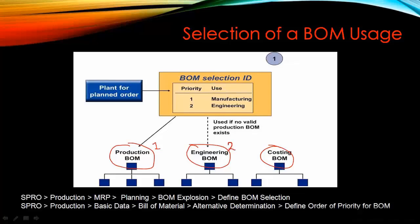The second priority would be the engineering BOM, and the third priority is the costing BOM. So if the system finds the production BOM, it will copy it and finish the process. If the production BOM is not maintained, the system looks for the engineering BOM. If that isn't there, it looks for the costing BOM. That's how the system prioritizes which is first, second, and so on. To see this in customizing, follow the menu path shown at the bottom of the screen.